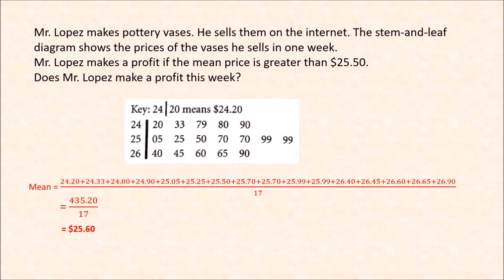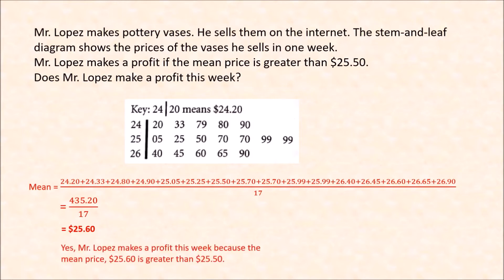Is $25.60 greater than $25.50? Yes. So that means Mr. Lopez makes a profit this week, because the mean price from the stem-and-leaf diagram is $25.60, which is greater than $25.50.